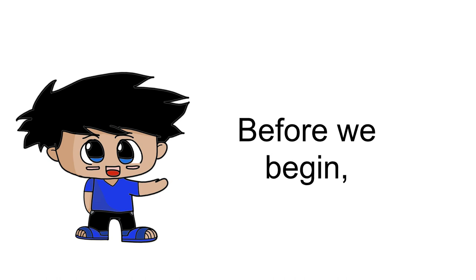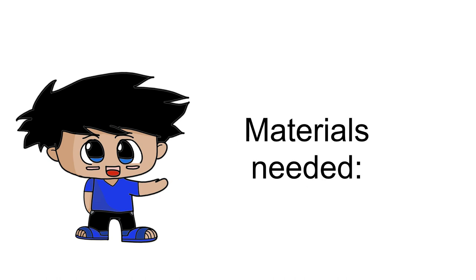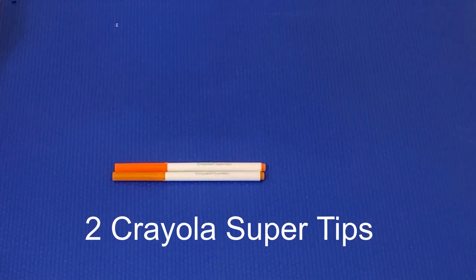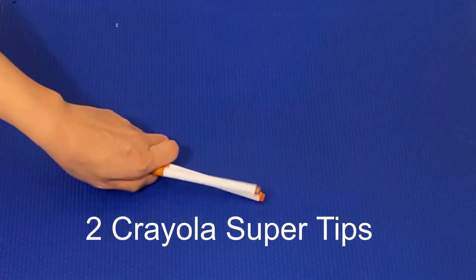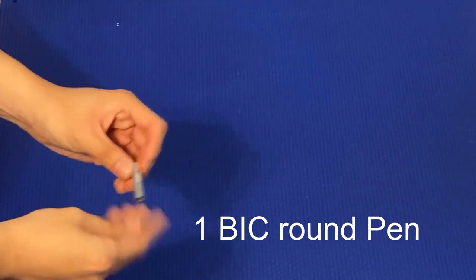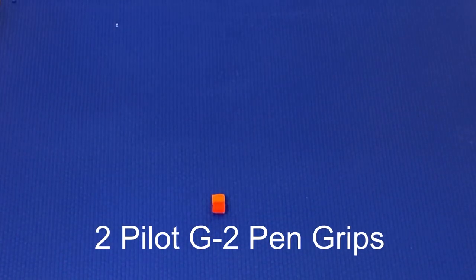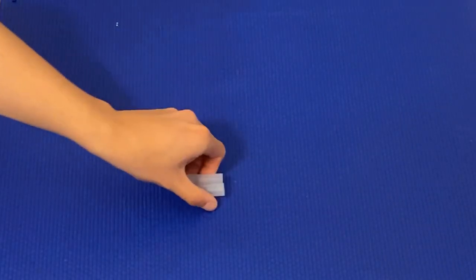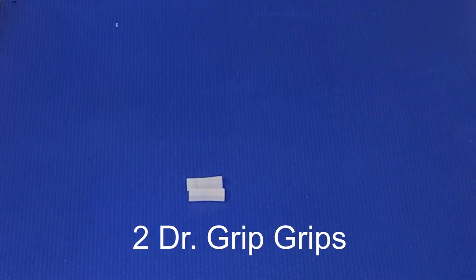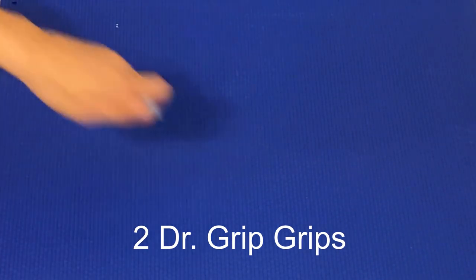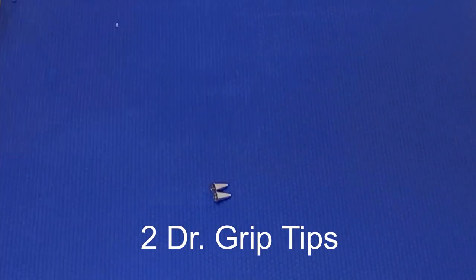Before we begin, I would like to mention that these are the materials that you need. The first material you need will be two Crayola super tips. The second material will be one big round Bic pen. The third one will be two Pilot G2 pen grips. The fourth one will be two Dr. Grip grips. The fifth one will be two Dr. Grip tips.